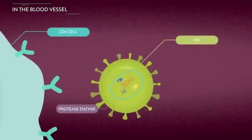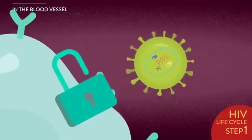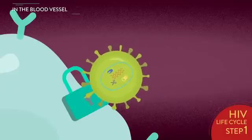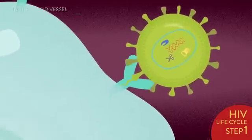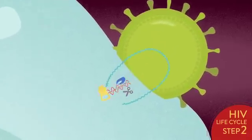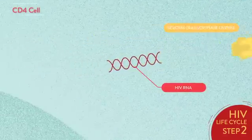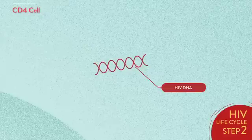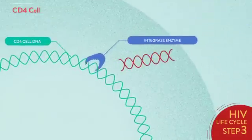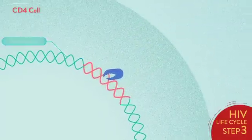But HIV attacks CD4 cells. The HIV life cycle begins when HIV attaches itself to the CD4 cell and transfers its proteins and genetic materials into it. An HIV enzyme called reverse transcriptase converts HIV RNA into HIV DNA, while an integrase enzyme integrates HIV DNA into the host CD4 cell's DNA.